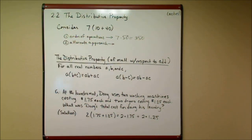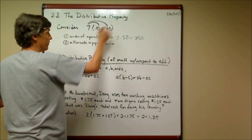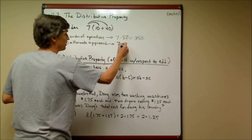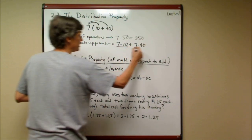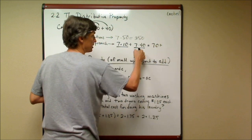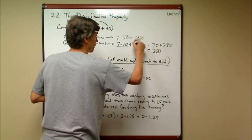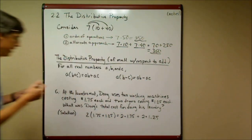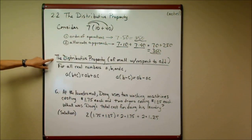The distributive property allows me to multiply the seven over the sum: seven times ten plus seven times forty. We do those multiplications before we add, so that's seventy plus two hundred eighty, and notice I'm going to get the same answer as I got the first time through.